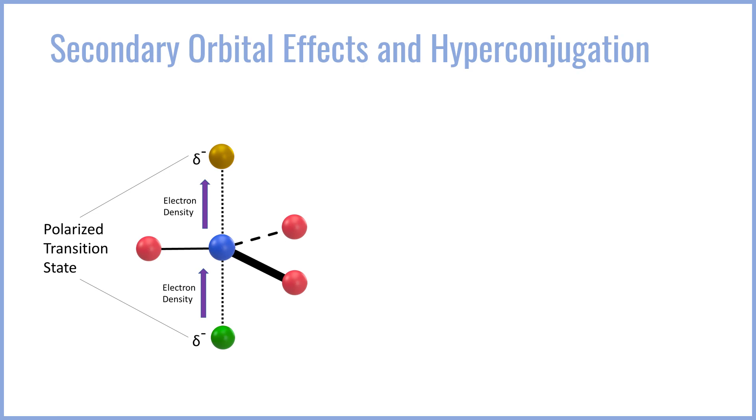Now when we think of allylic substrates, things that are adjacent to a double bond, typically we think of an SN1 pathway. We create a resonance stabilized carbocation that's good, that favors SN1. However,